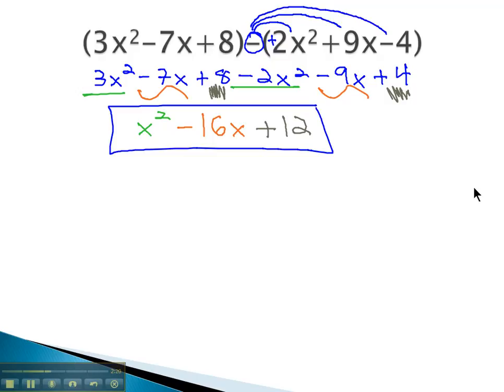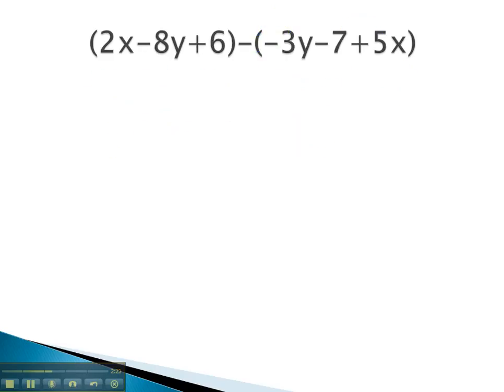Let's try another example. Again, in this problem, we are subtracting two polynomials, and so our first step is going to have to be to distribute that negative through, that opposite sign.